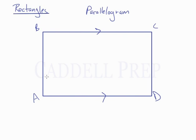So BC is parallel to AD, and AB is parallel to DC.